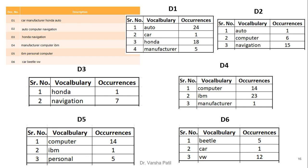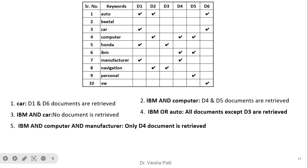Now we are going to solve the queries. For simplicity, queries are represented in a matrix form, which is better to understand. D1 to D6 documents are listed and keywords are arranged in alphabetical order. The first query is 'car' — a single word query. Car is present in D1 and D6, so D1 and D6 are retrieved. For 'IBM AND car', there is no common document because IBM is present in D4, D5 and car is present in D1 and D6, so no document is retrieved.